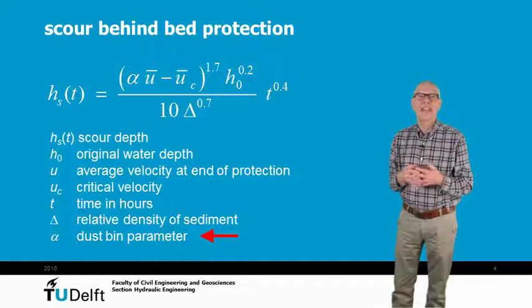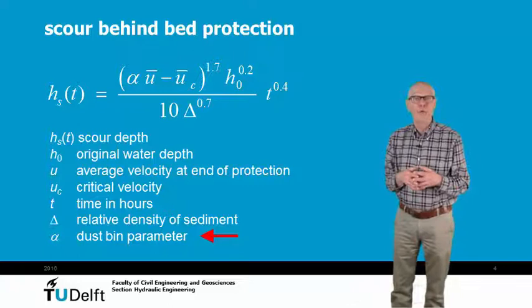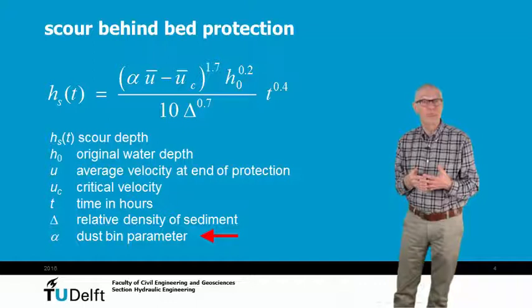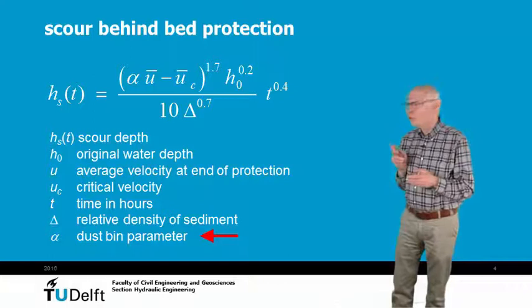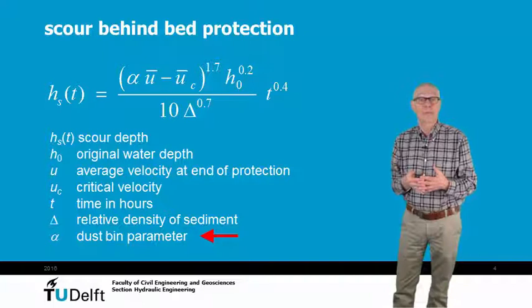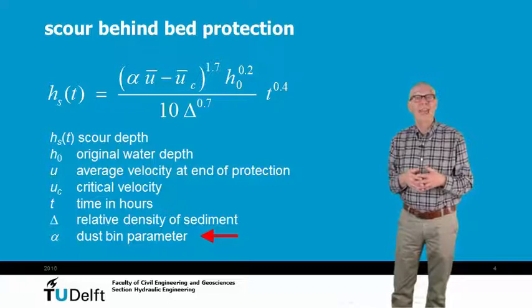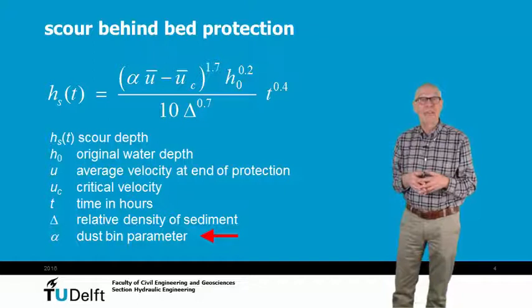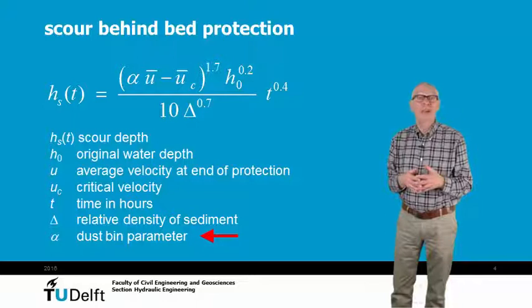It is necessary to calculate the depth of a scour hole in order to determine the required length. Because usually a closure has a limited duration, it is not necessary to determine the equilibrium depth of the hole, but the depth at a certain time. For this purpose, one can use the Breusers formula. This formula gives the scour depth as a function of time and current velocity. The critical velocity can be calculated with the Shields formula. The velocity at the end of the bed protection is calculated from the velocity in the closure gap, and then is introduced for a flow expansion over the bed protection.